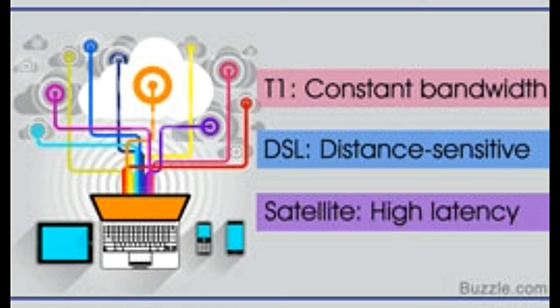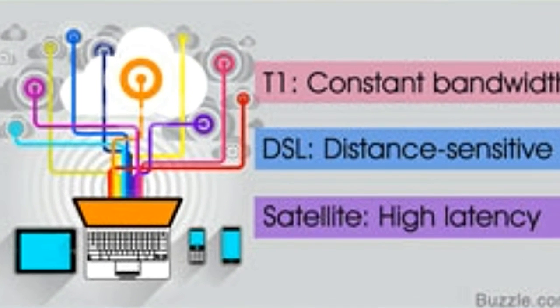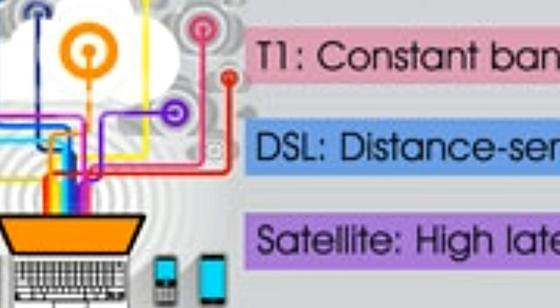T1, also known as the DS1 carrier, is a T-carrier signaling system used for the transmission of voice and data. It was developed by Bell Labs and is popularly used in Japan and North America. DS1 refers to the bit pattern used on the T1 line. 24 eight-bit channels make up a DS1 circuit, wherein each channel is a 64 kilobit per second carrier circuit. A T1 line can carry data at the rate of 1.544 megabits per second. It can be plugged into a telephone system to carry voice signals, or into a network router to carry data, facilitating reliable communication.